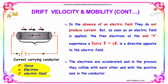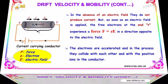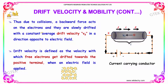As soon as the electric field is applied, the free electrons at end Y experience a force F, equal to eE, in a direction opposite to the electric field. The electrons are accelerated, and in the process they collide with each other and with the positive ions in the conductor. Due to collision, a backward force acts on the electron.